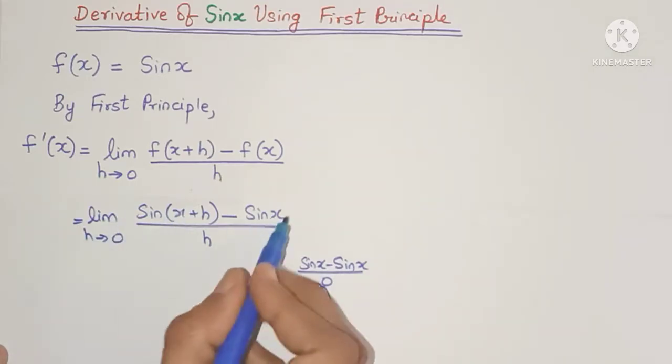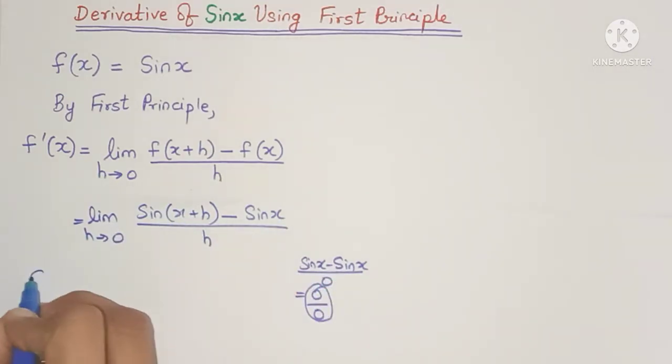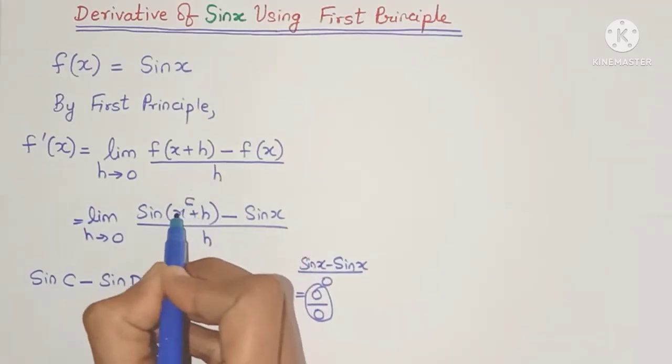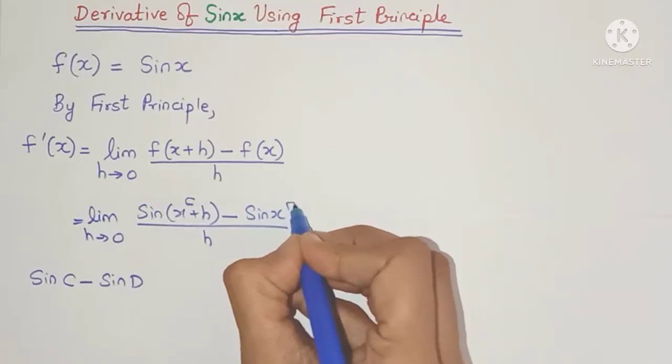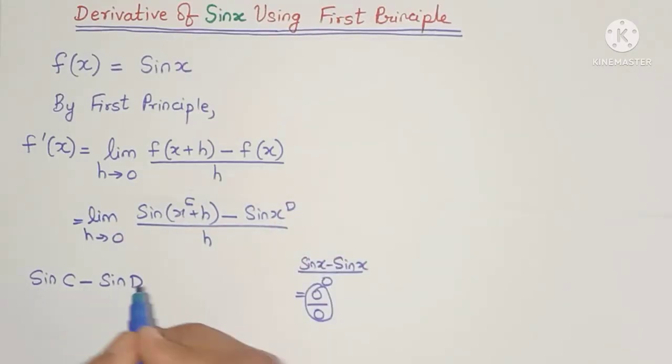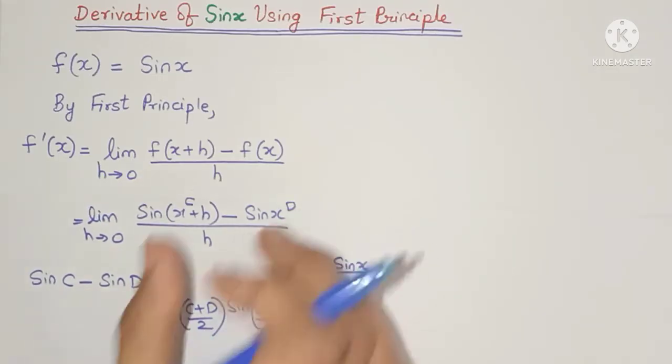Now if you see the numerator, it looks very much like the expression sin c minus sin d. Where you can take c as x plus h and d as x. Now sin c minus sin d is equal to 2 cos of c plus d by 2 into sin of c minus d by 2. This is a transformation formula. So let's substitute this formula.